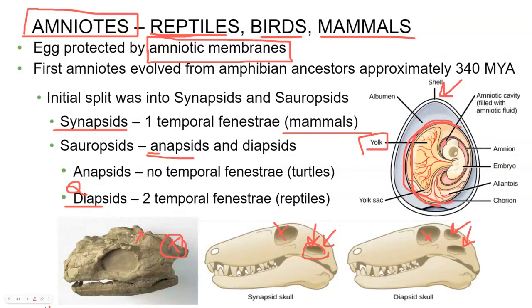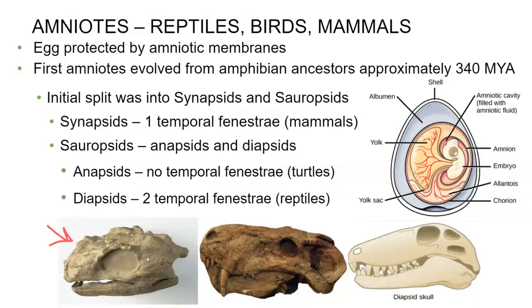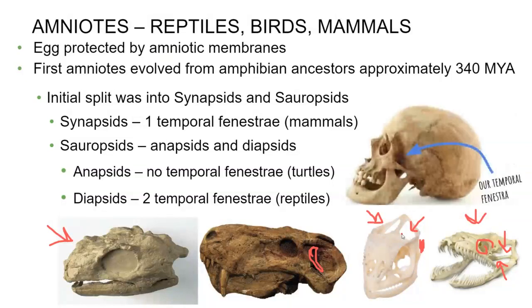Here are some pictures: a fossilized turtle skull with no fenestra. Here is a fossilized mammal — you can see the fenestra. And here we have a modern snake and a chameleon — they have big eye sockets, and behind the eye sockets we can see two fenestra. Remember, humans are synapsids — we have one fenestra, it's right here.